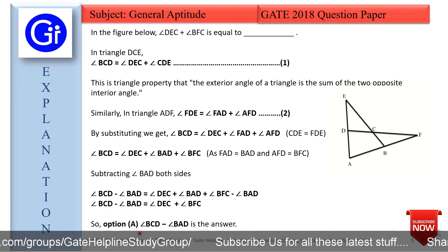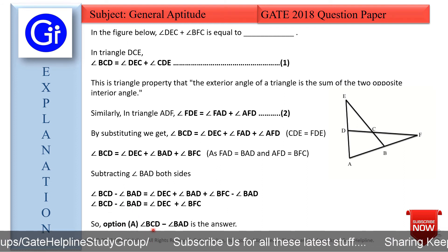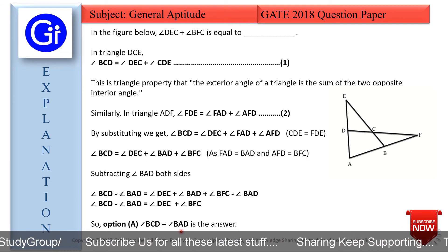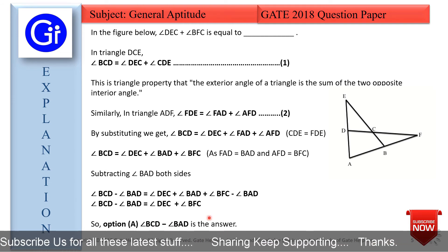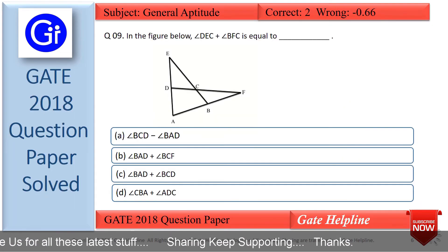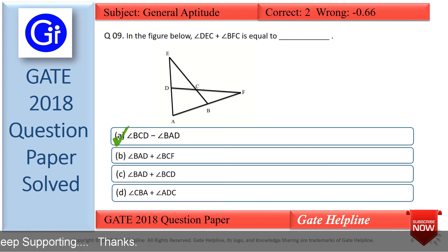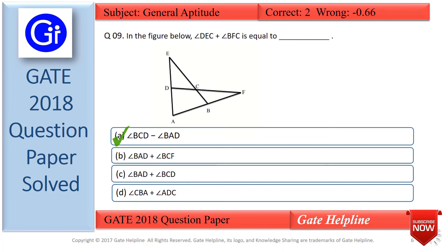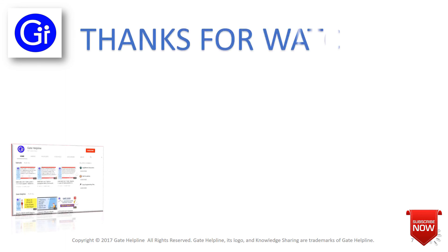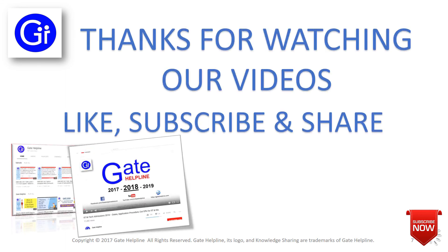So option A, that is angle BCD minus angle BAD, is the correct answer. Angle BCD minus angle BAD equals angle DEC plus angle BFC. Thanks for watching our video — please like, subscribe, and share our videos to appreciate our work. If you have any doubt or question, please comment below.